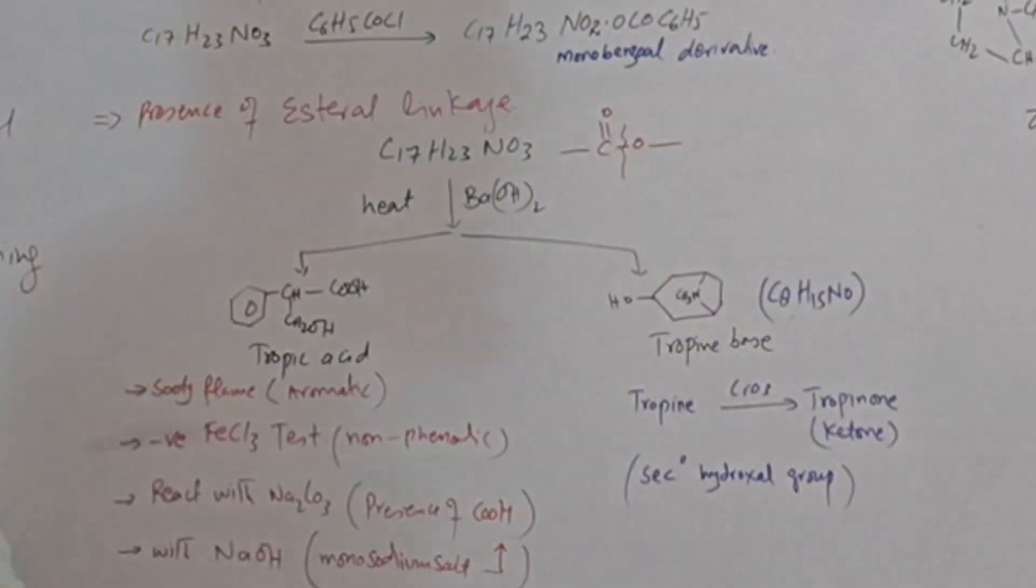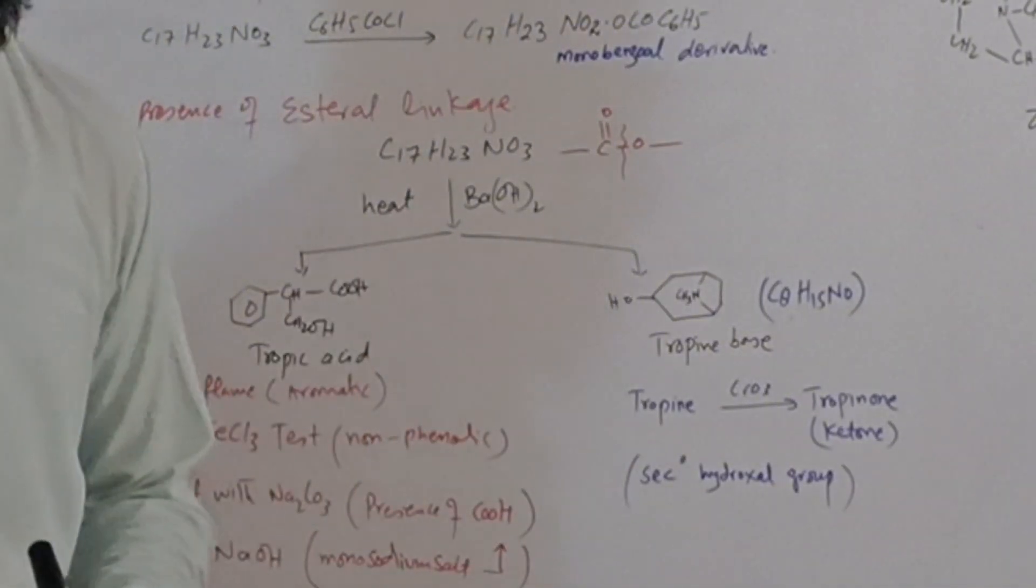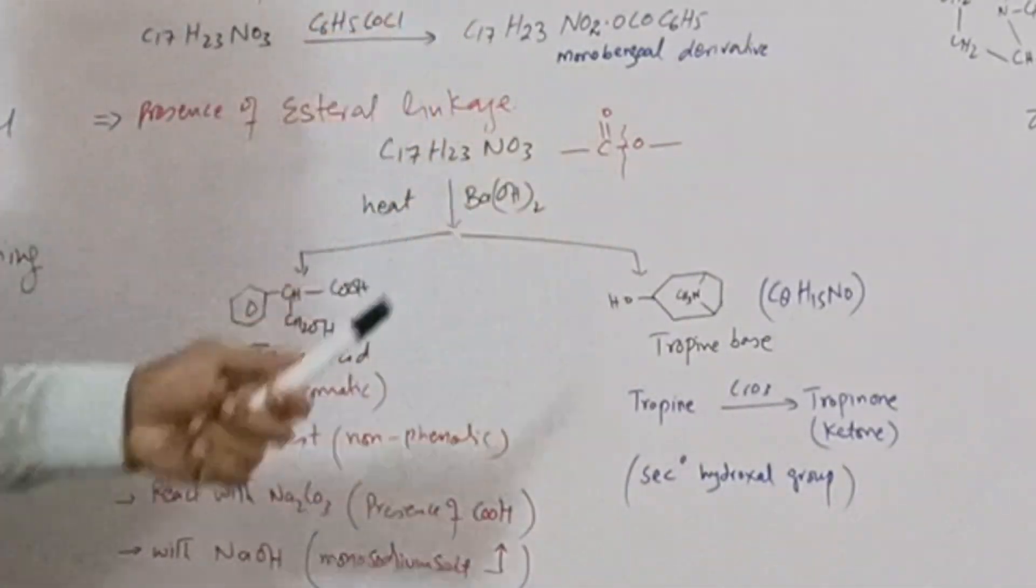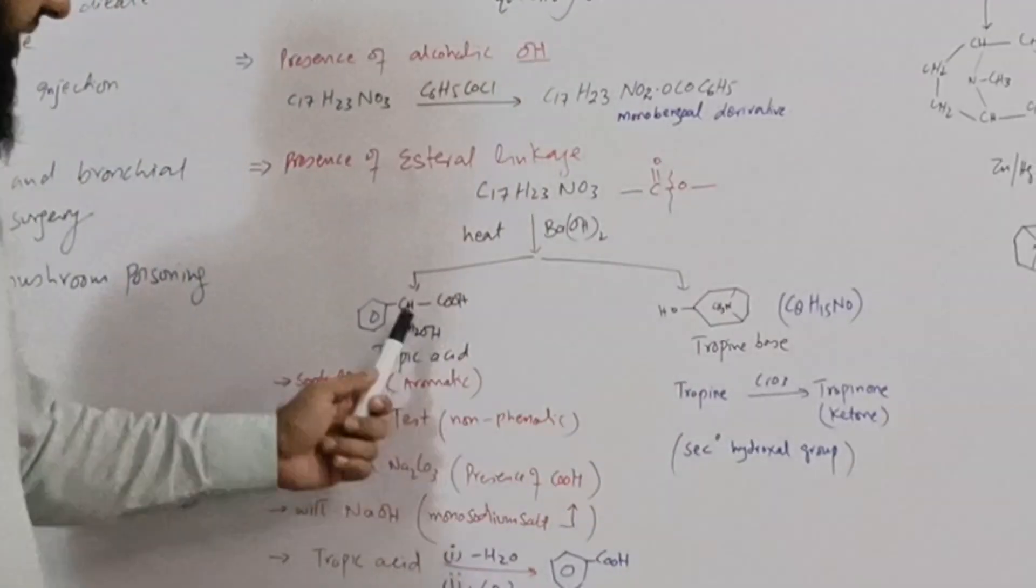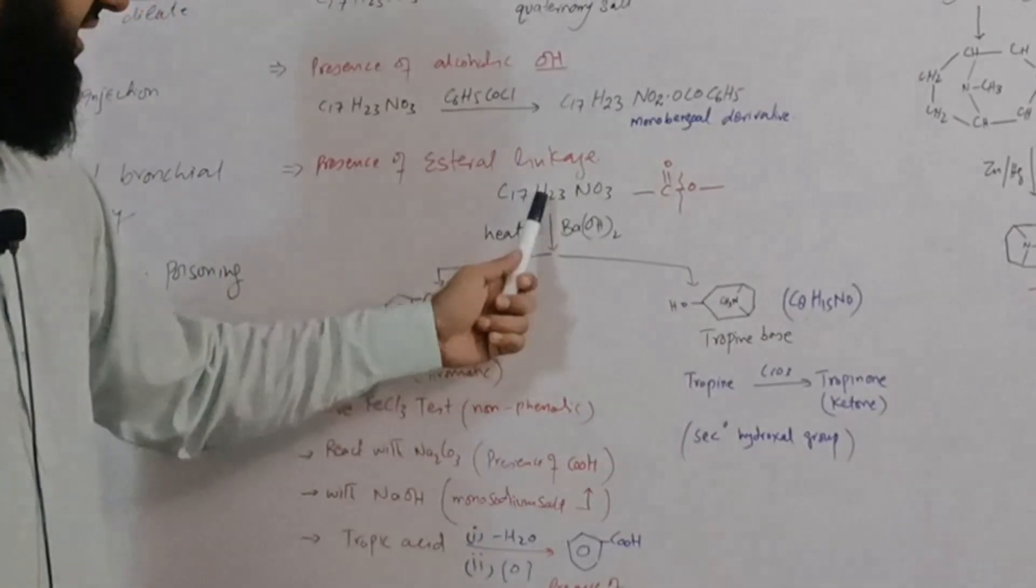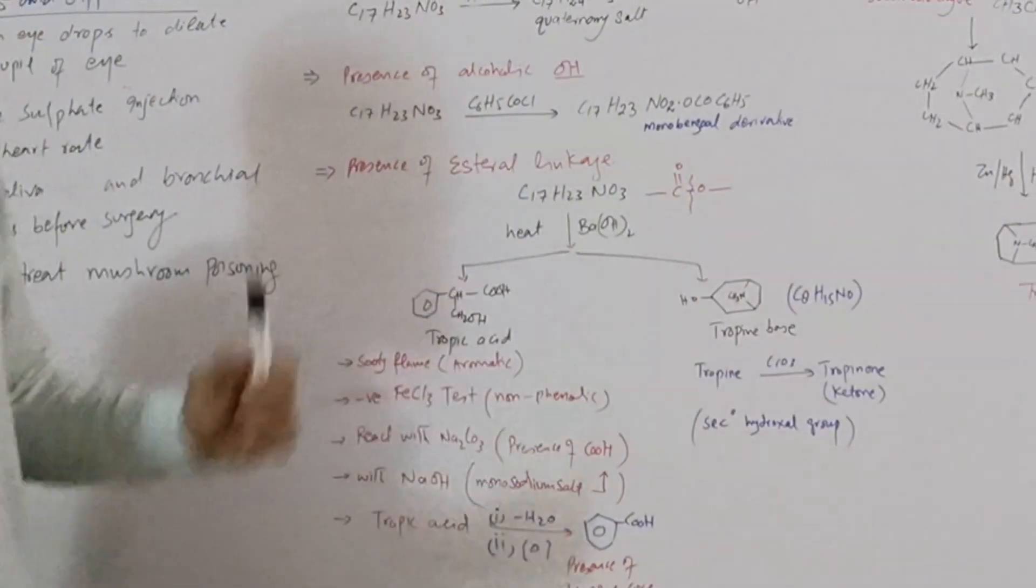After hydrolysis we get an acid called tropic acid and a base or alcohol called tropine base. We can also find the structural evidences of atropine from their respective components obtained after the hydrolysis of atropine.